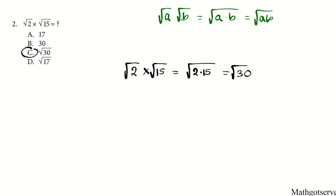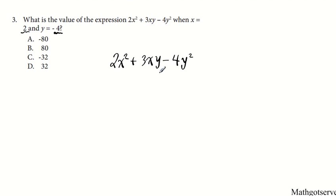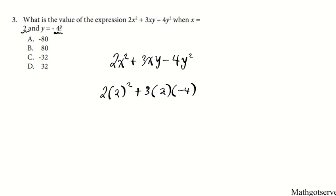Moving along to question number 3. It says what is the value of the expression 2x squared plus 3xy minus 4y squared when x equals 2 and y equals negative 4? We're going to substitute these values into this expression: 2x squared plus 3xy minus 4y squared. Anywhere we see x we replace it with 2, and anywhere we see y we replace it with negative 4. So we write 2 times (2) squared plus 3 times (2) times (negative 4) minus 4 times (negative 4) squared.